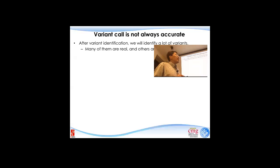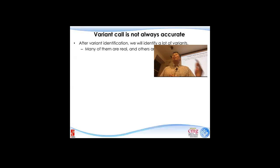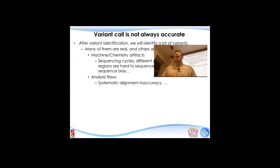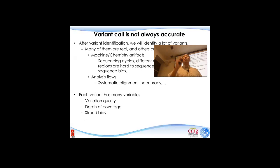There are many different sources of errors — machine or chemistry related errors, or analysis errors such as poor alignment. Each variant has many different variables, including the variant quality — calculated from the equations I showed — but also others like depth of coverage, strand bias, and mapping quality. For every single location we are looking at, there will be many parameters to consider.